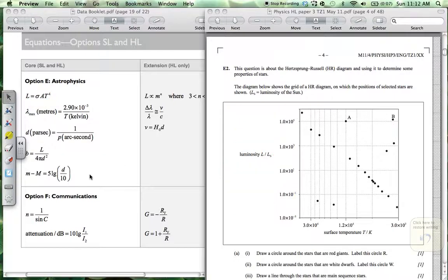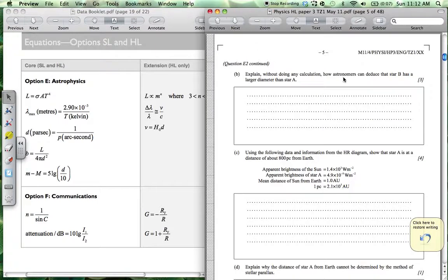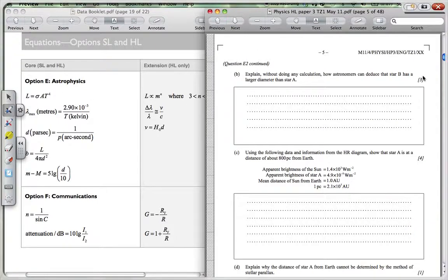because if we go here, we will see that it's three marks here. So to get the three marks here, you basically got to mention three things here. You got to mention that the temperature of A is bigger than B. You've got to mention that the luminosity is roughly the same. And therefore, according to the formula, this formula over here, the area of B must be bigger than A.